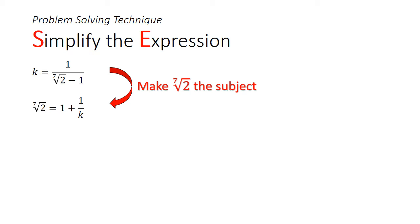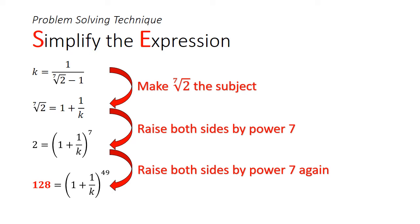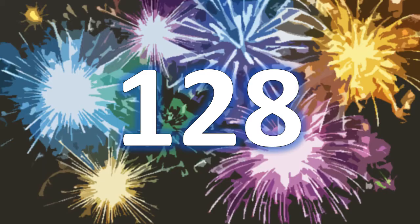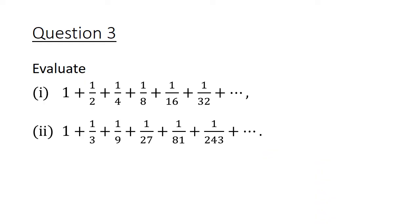Alternatively, you could make the seventh root of 2 the subject. By raising both sides to the power of 7, you'll get 1 plus 1 over k to the power of 7 equals 2. This tells you that 1 plus 1 over k to the power of 49 would be equal to 2 to the power of 7, which is 128. So the answer is 128. Did you get the answer?